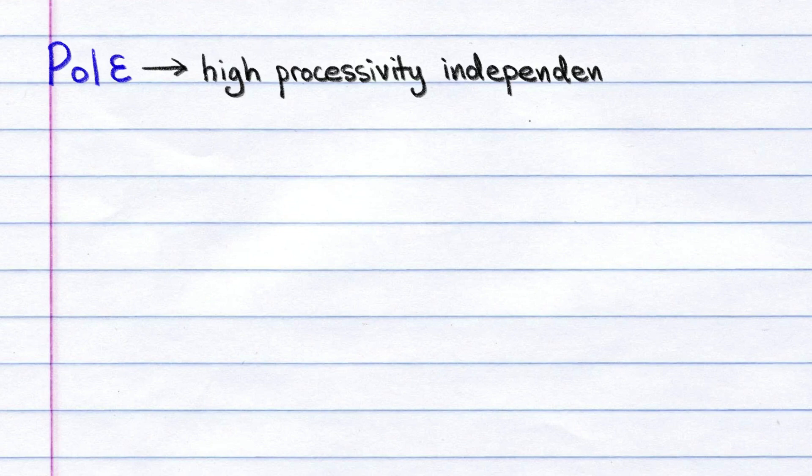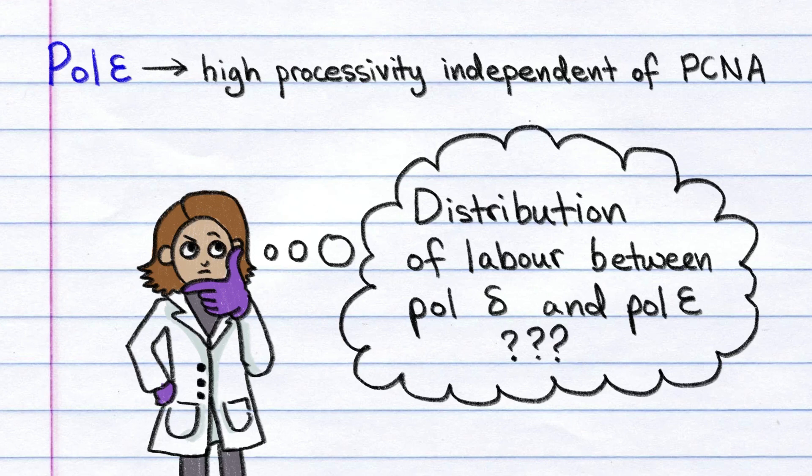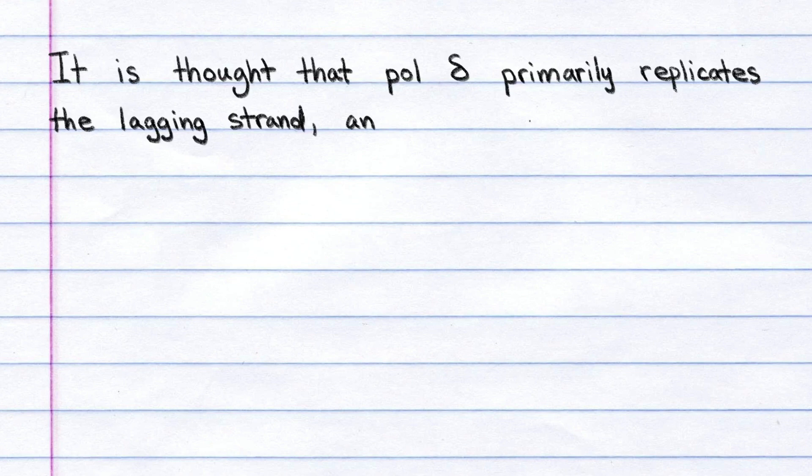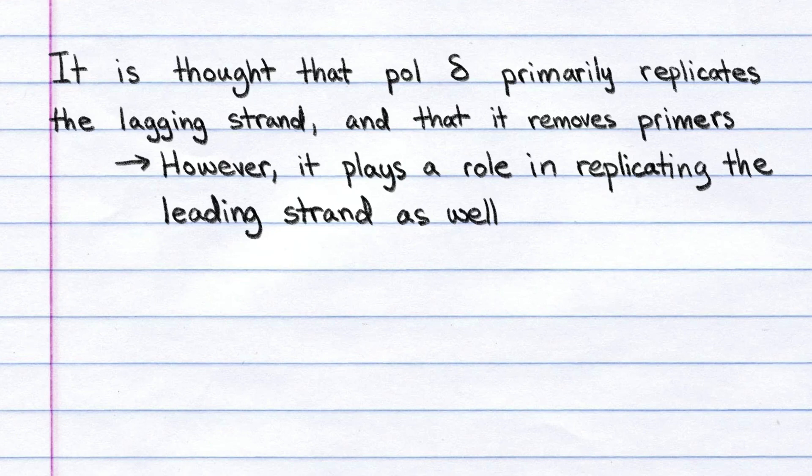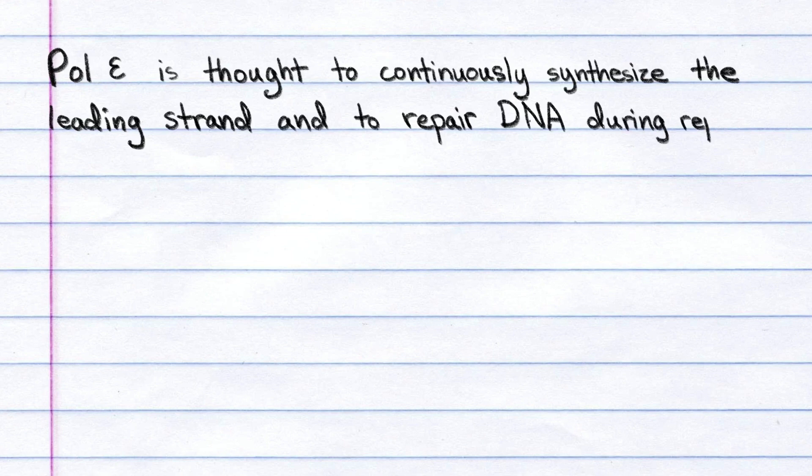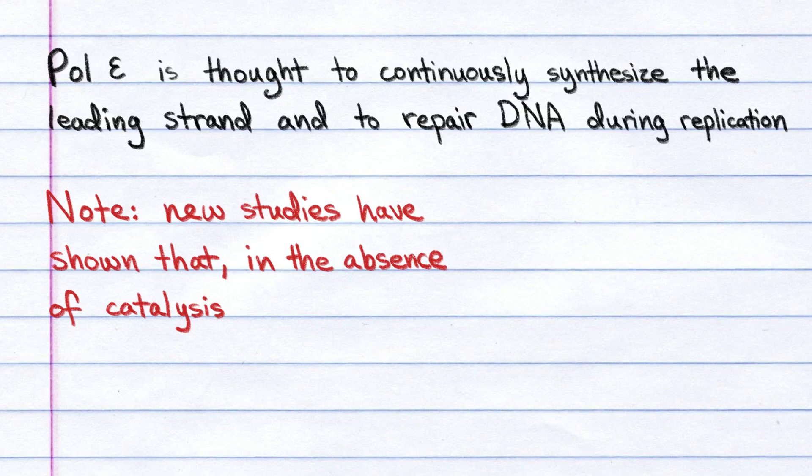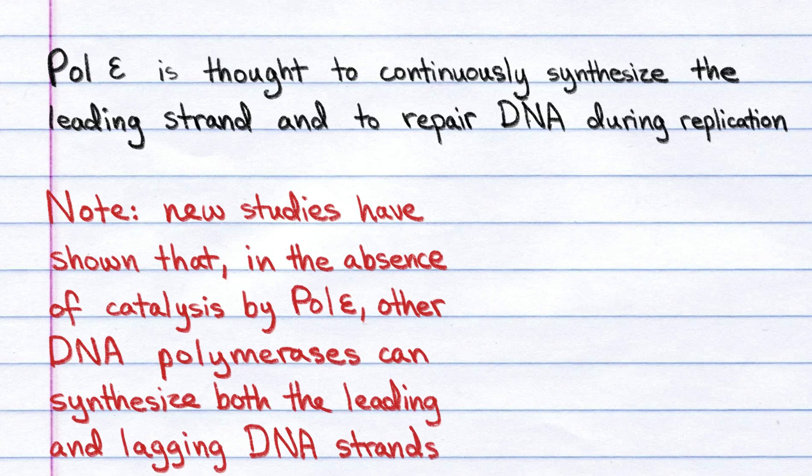Pol-epsilon has high processivity independently of PCNA. There is some debate over the distribution of labor between pol-delta and pol-epsilon. It is thought that pol-delta primarily replicates the lagging strand, and that it removes primers. However, it plays a role in replicating the leading strand as well. Pol-epsilon is thought to continuously synthesize the leading strand and to repair DNA during replication. However, new studies have shown that, in the absence of catalysis by pol-epsilon, other DNA polymerases can synthesize both the leading and lagging DNA strands.